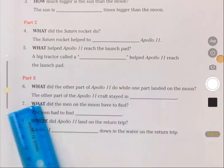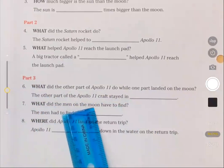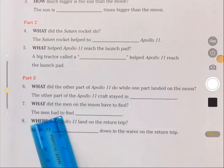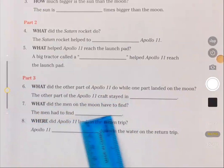Question seven: What did the men on the moon have to find? The men had to find blank.